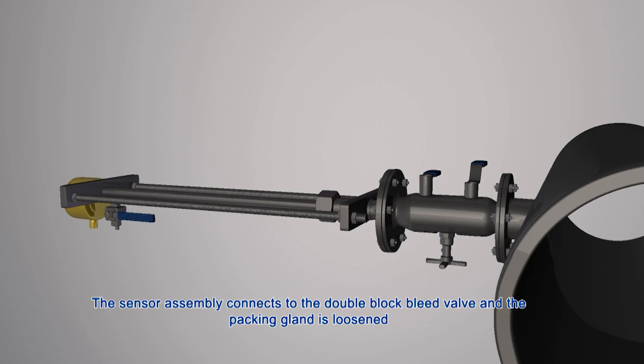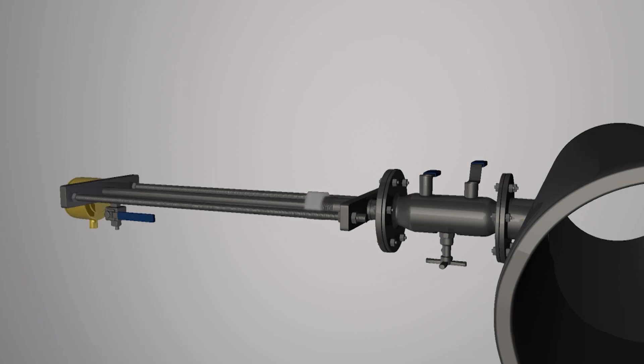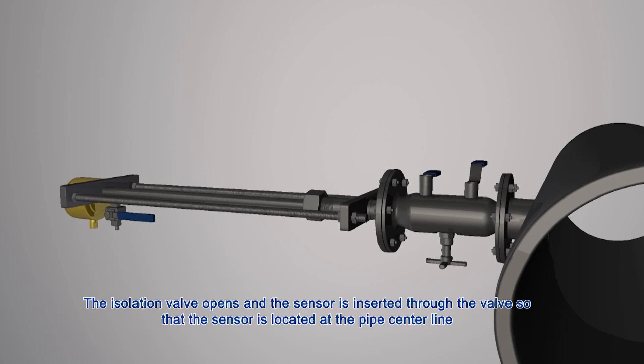The sensor assembly connects to the double block bleed valve and the packing gland is loosened. The isolation valve opens and the sensor is inserted through the valve so that the sensor is located at the pipe center line.